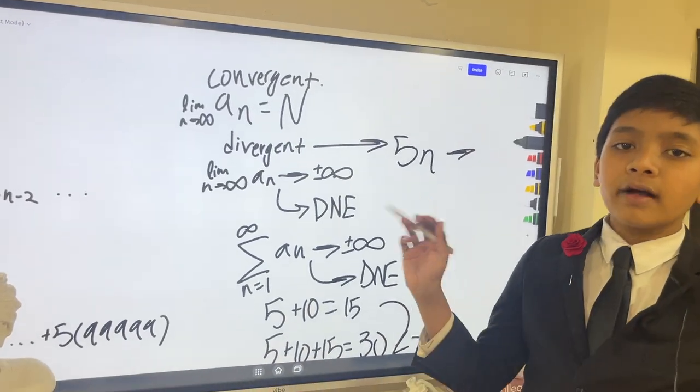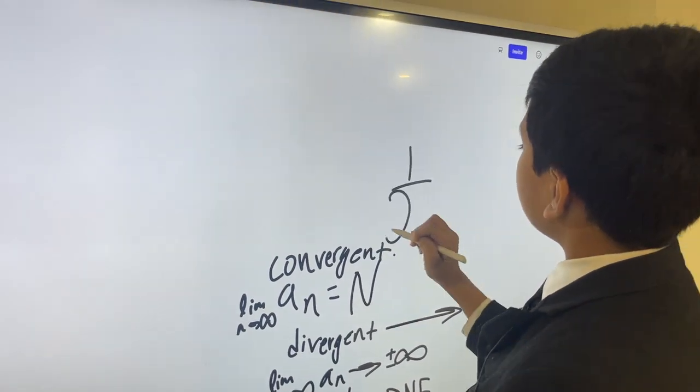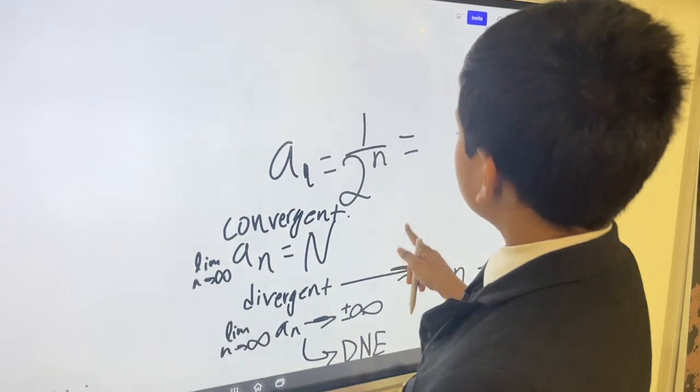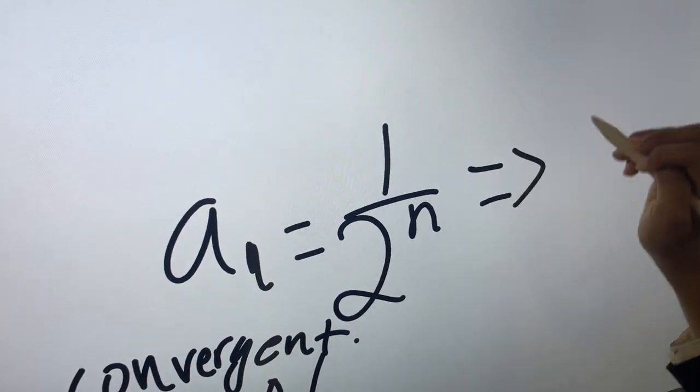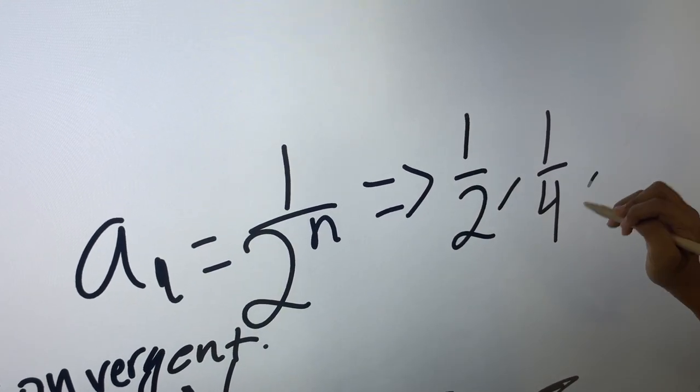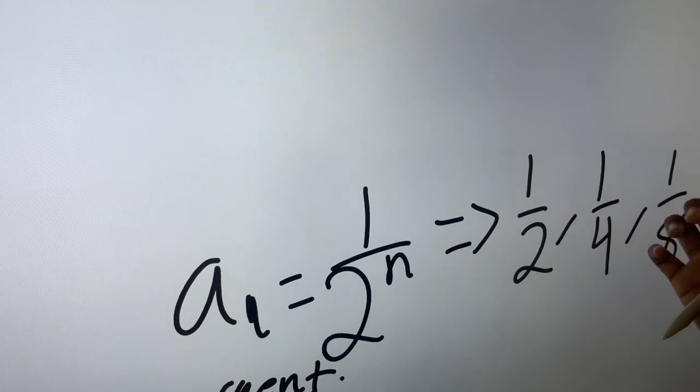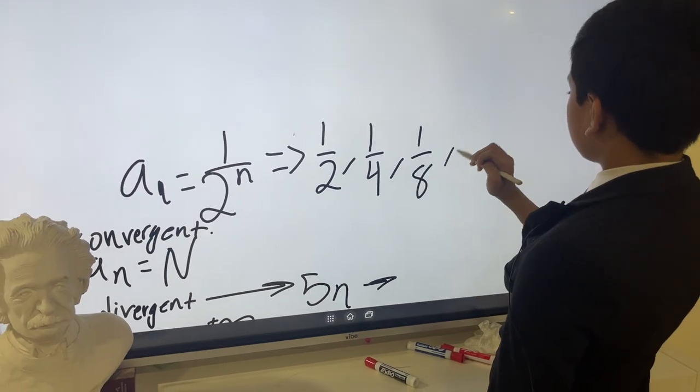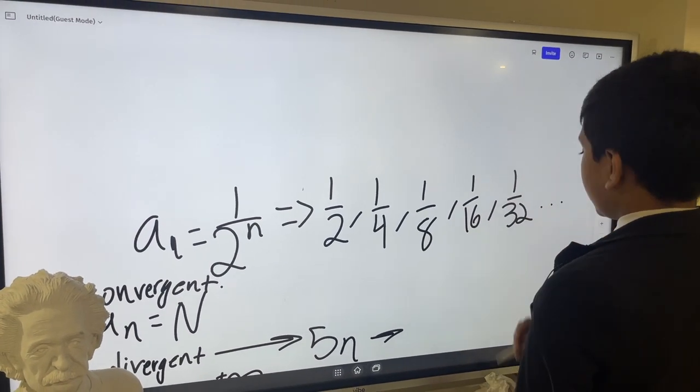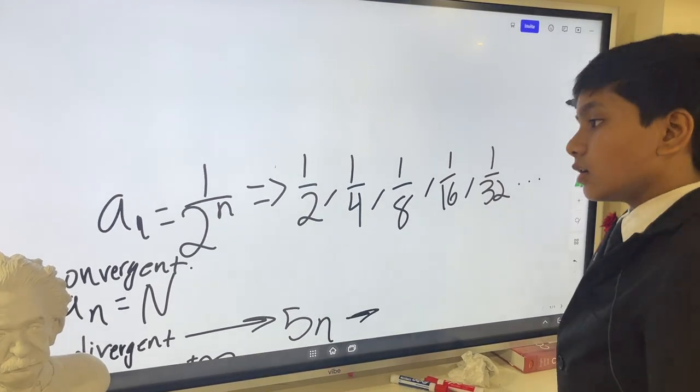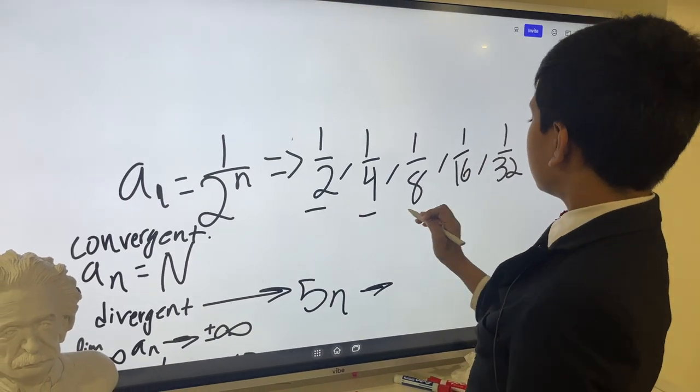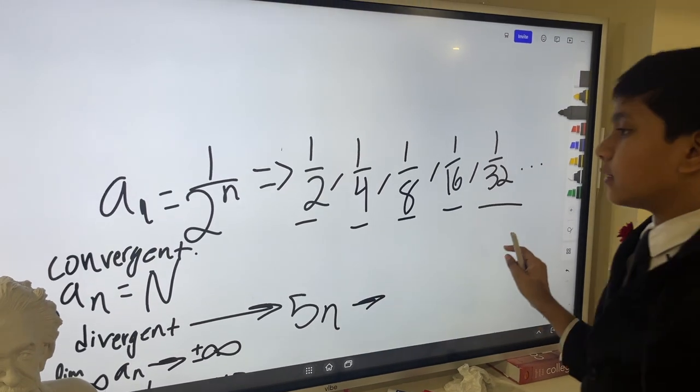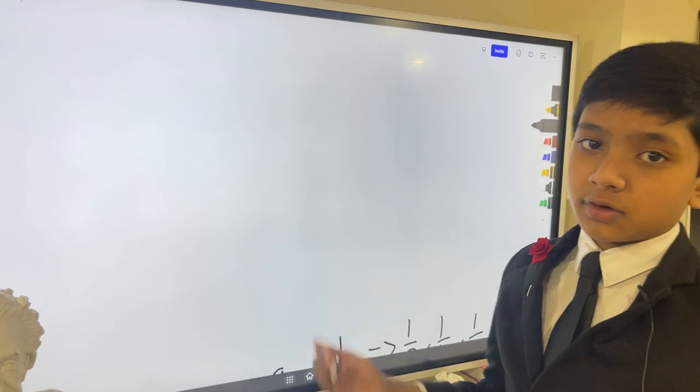Now let me show you an example of something convergent. That would be something like 1 over 2 to the n. Looks a little advanced, but trust me, it's not actually that hard. That would be like 1 over 2, then 1 over 4 because 2 squared, 1 over 8, 1 over 16, 1 over 32, etc. Now you might be asking, how is this convergent? Well, the thing is, the terms decrease every time. And I can't show you exactly how this is convergent, we'll do that in a future video.